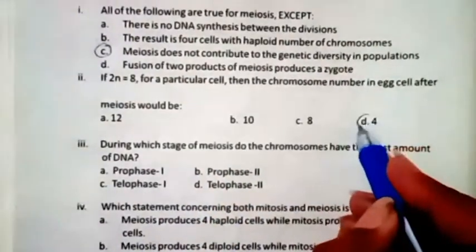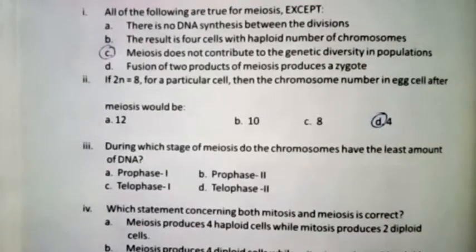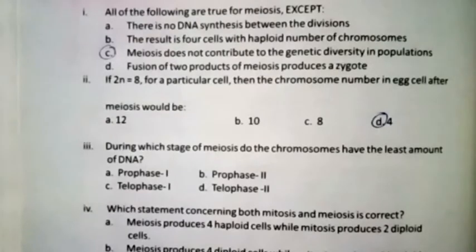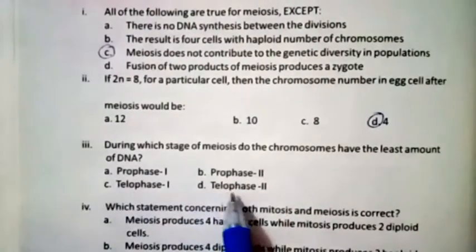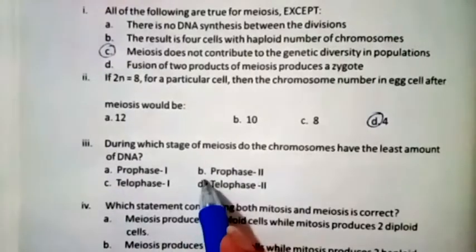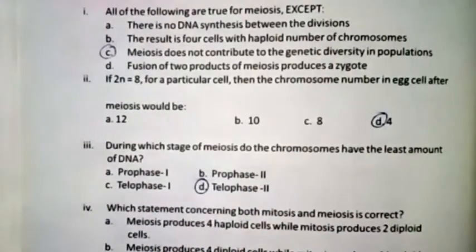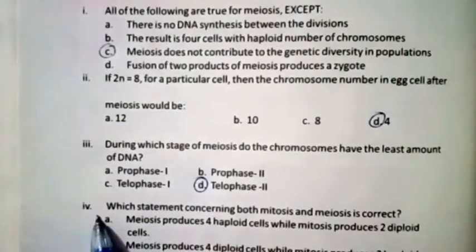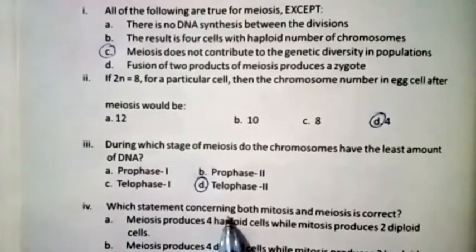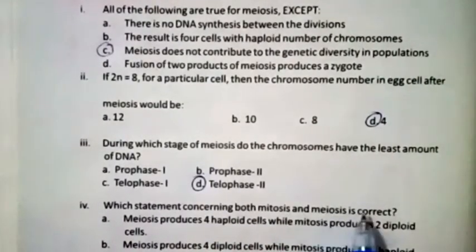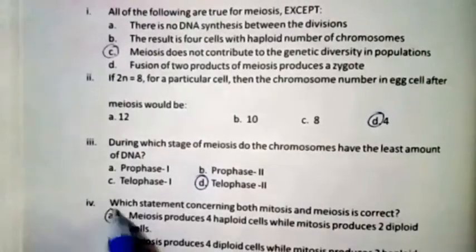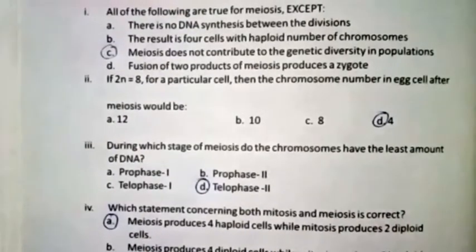Question three: During which stage of meiosis do chromosomes have the least amount of DNA — prophase one, prophase two, telophase one, or telophase two? The right option is telophase two. Question four: Which statement is true about both mitosis and meiosis? The right option is A — meiosis produces four haploid cells while mitosis produces two diploid cells.